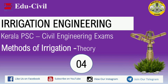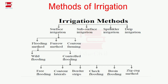We will discuss the topic of irrigation method. The irrigation method is classified into 4 heads. Surface irrigation is again classified into the flooding method, furrow method, and contour farming. The flooding method has 2 types: wild flooding and controlled flooding. Controlled flooding has 6 types.